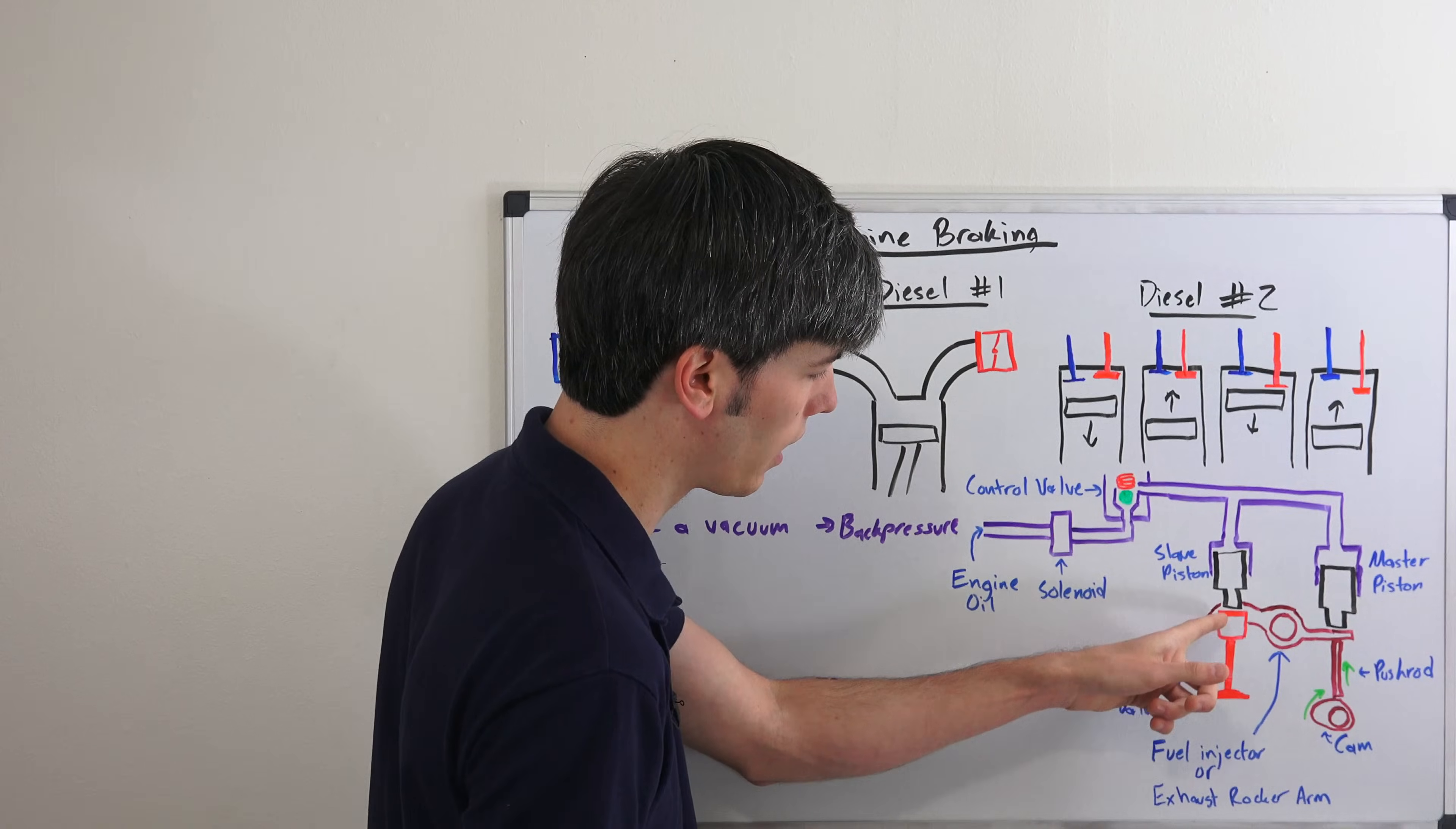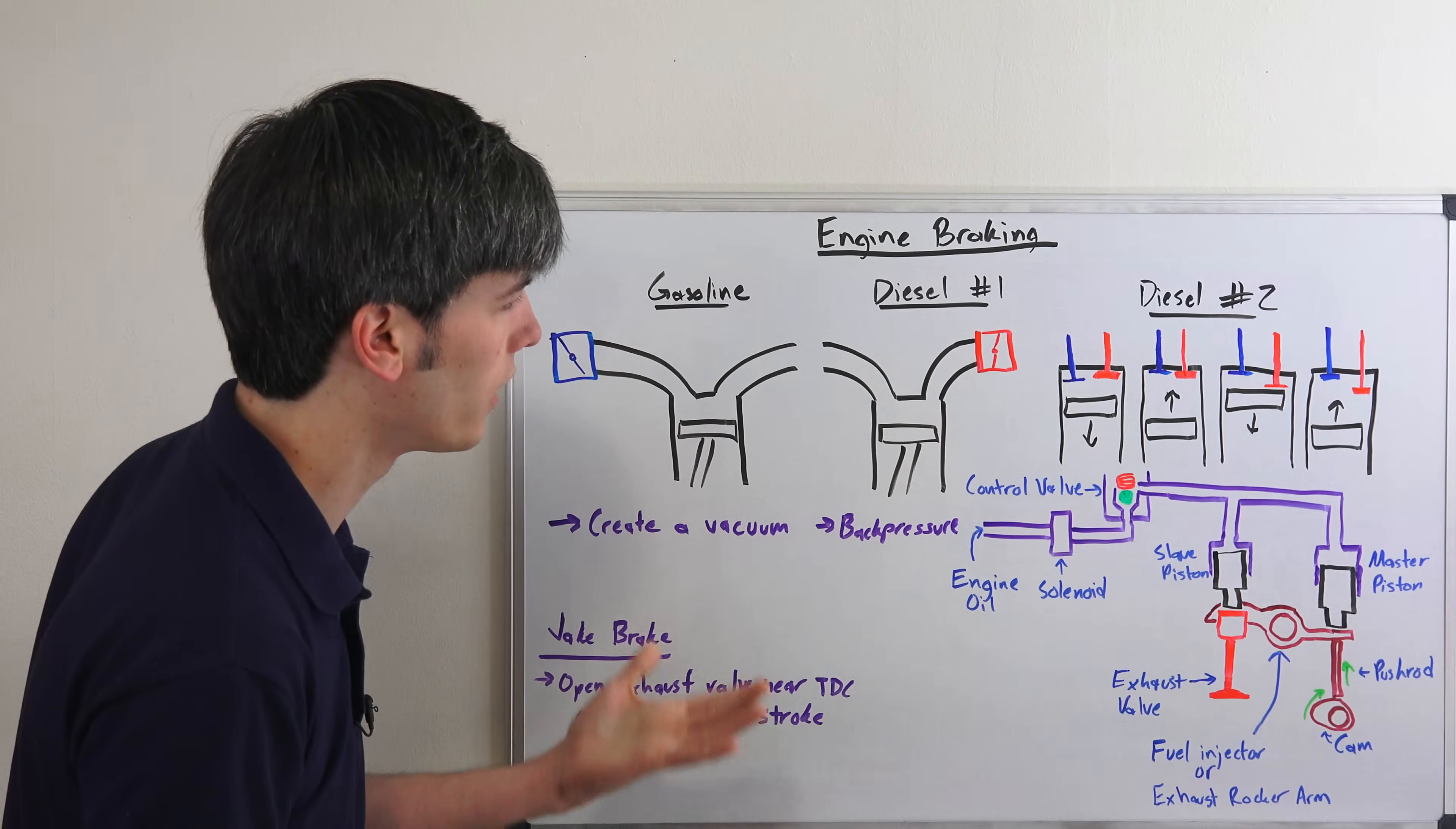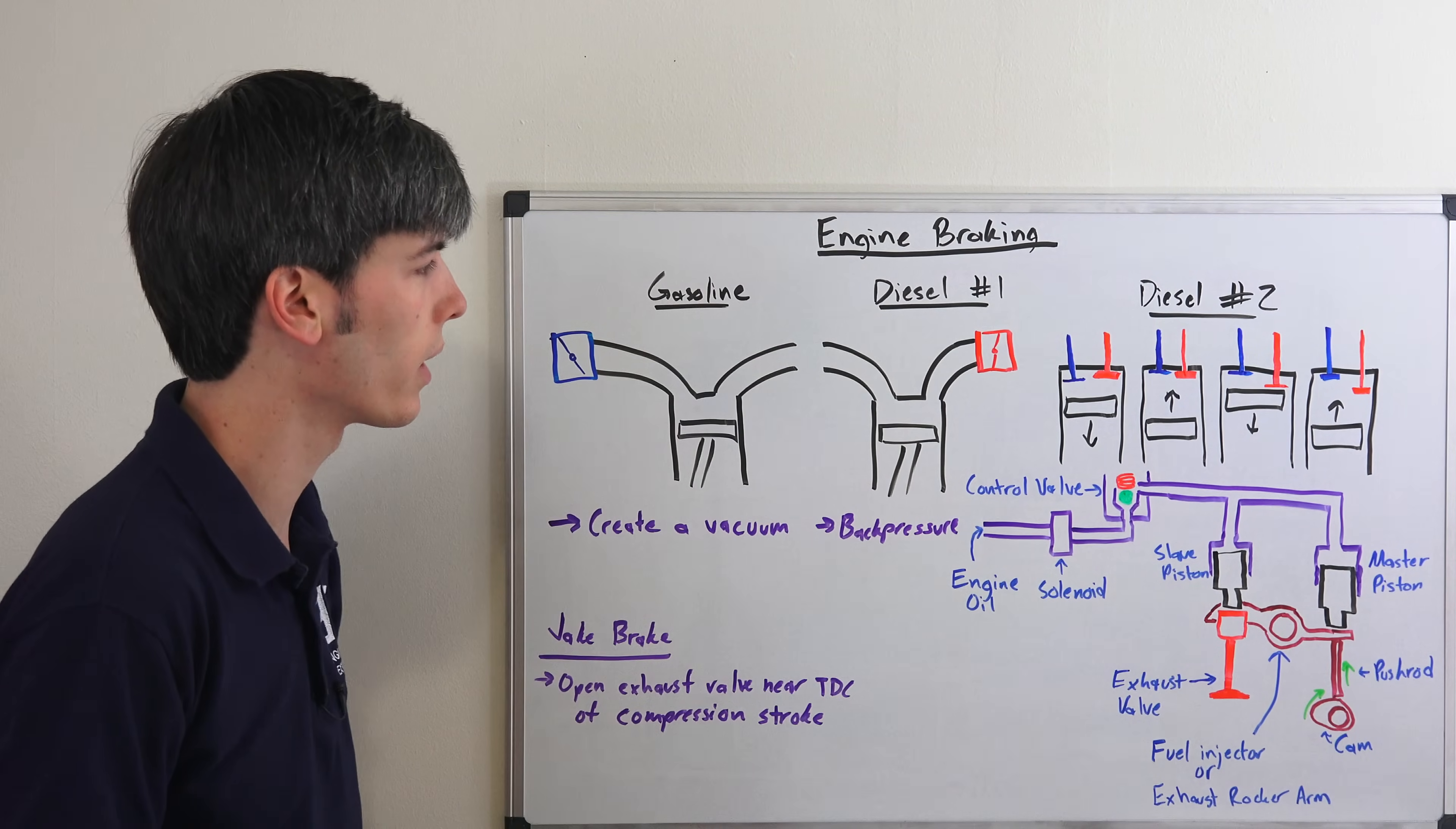So it moves that slave piston down which opens up the exhaust valve there at top dead center. And then you have your engine braking system working functionally. So that's how a jake brake system works.